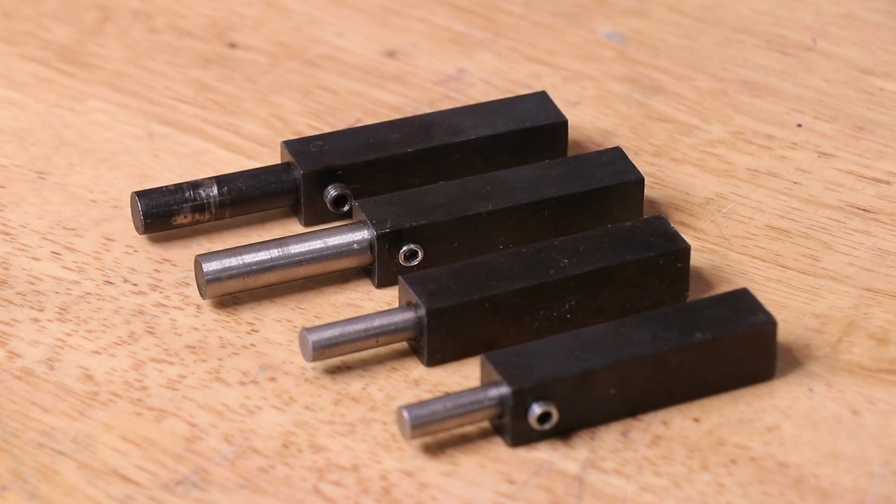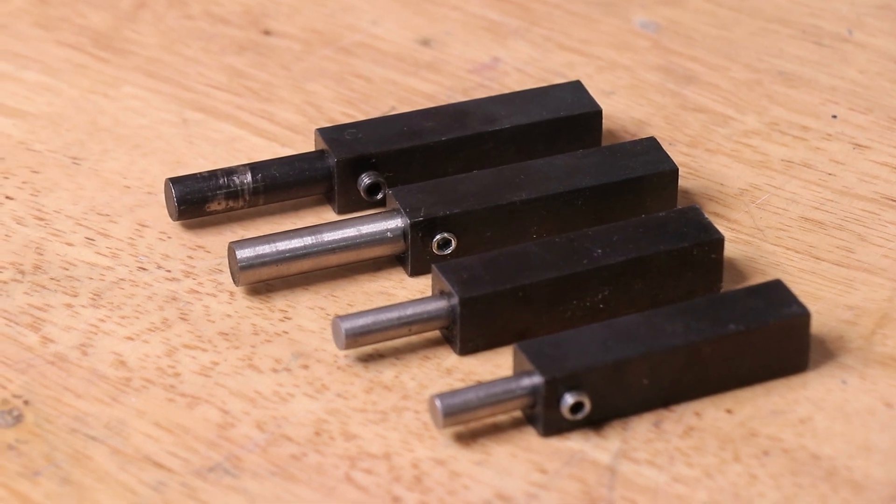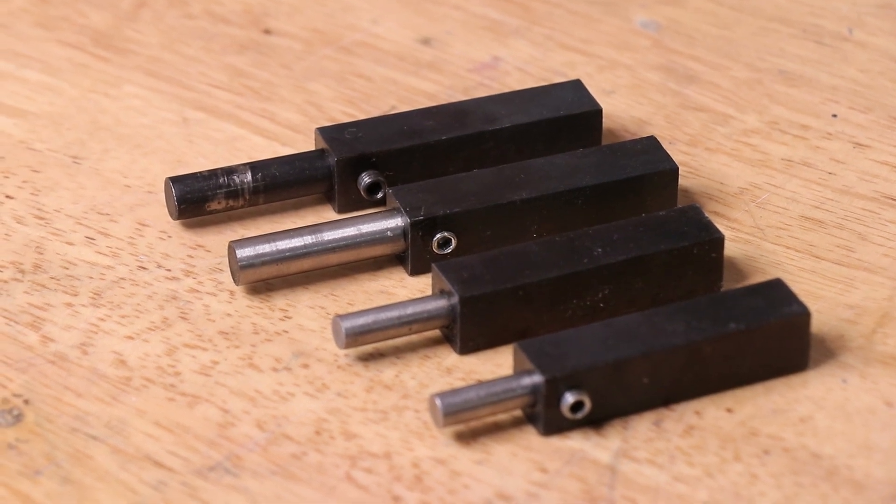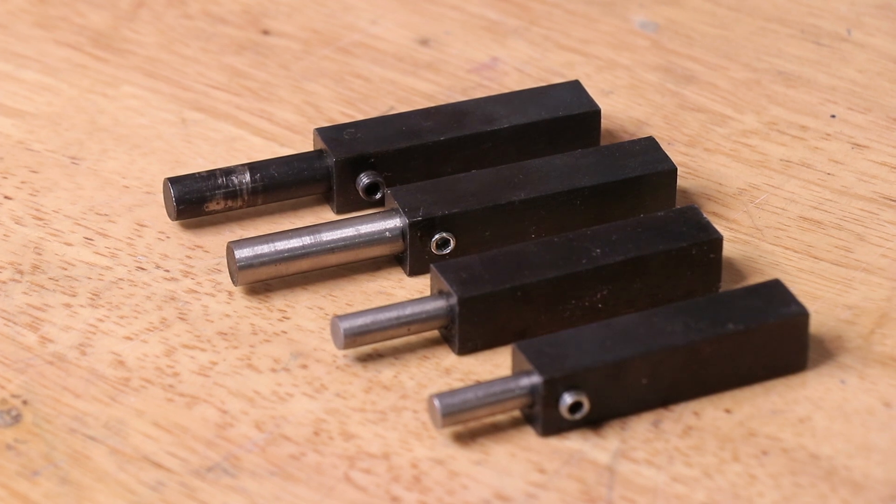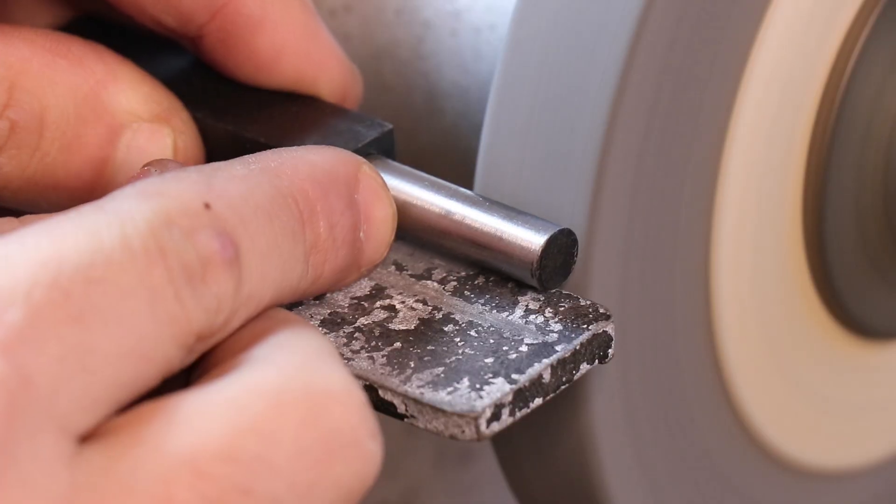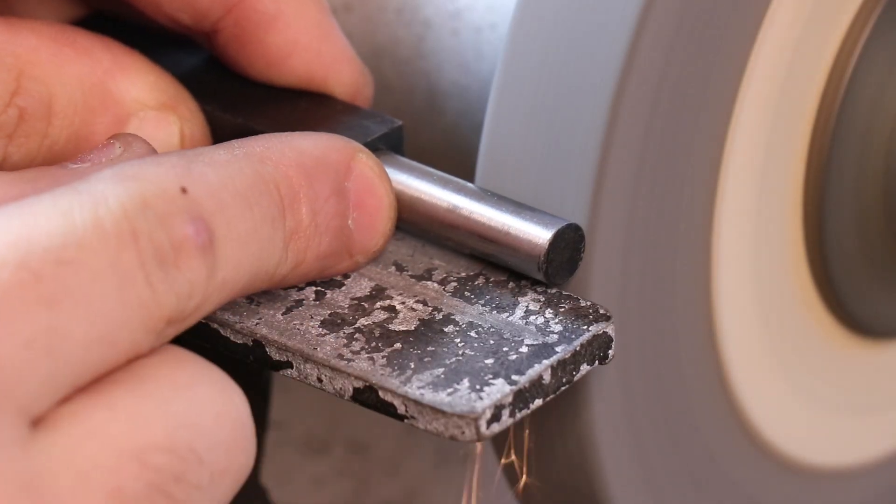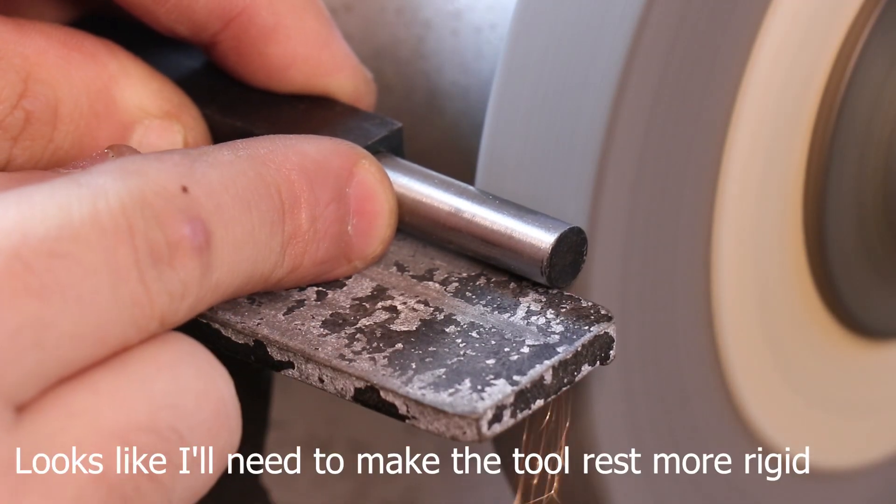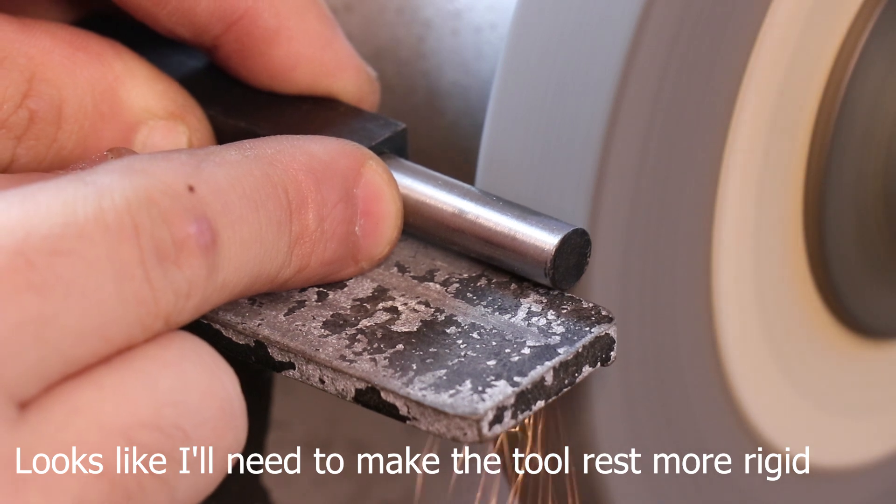Like regular tools, clearance and rake angles need to be ground in, and should be ground to suit the material you intend to cut. I'll take you through the process of grinding a basic lathe tool. This one will be left-handed, i.e. cutting away from the chuck, and it's a tool that I don't intend to use very often.